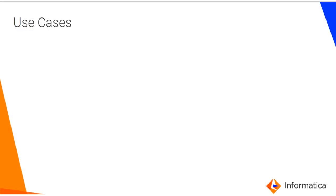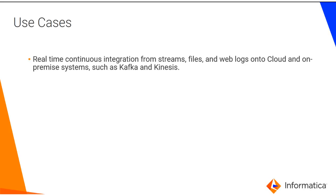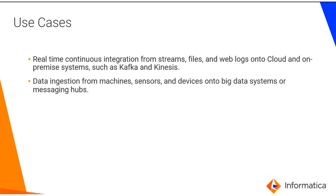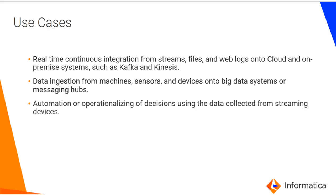Here are some use cases that Big Data Streaming can help you with: real-time continuous integration from streams, files and web logs onto cloud and on-premise systems such as Kafka and Kinesis; data ingestion from machines, sensors and devices onto big data systems or messaging hubs; and automation or operationalizing of decisions using the data collected from streaming devices.